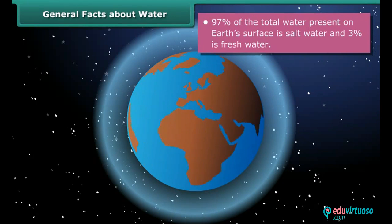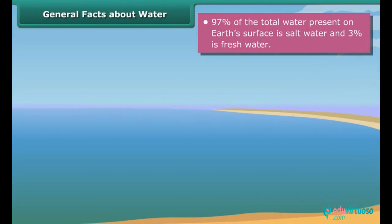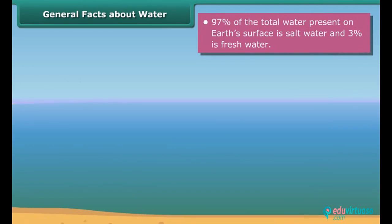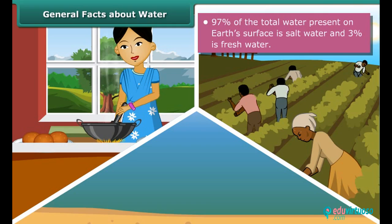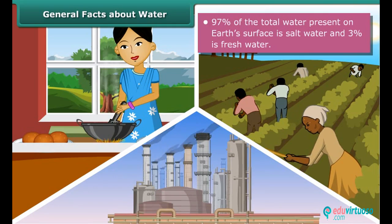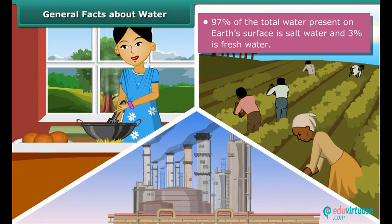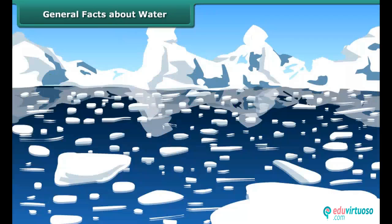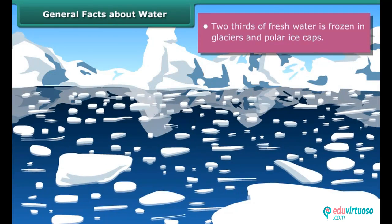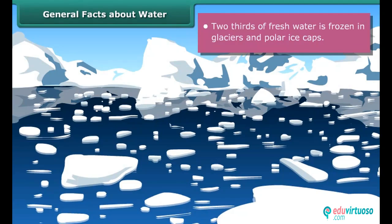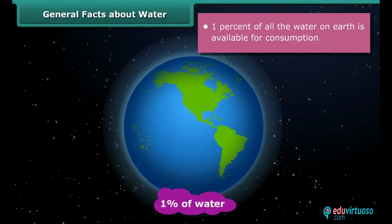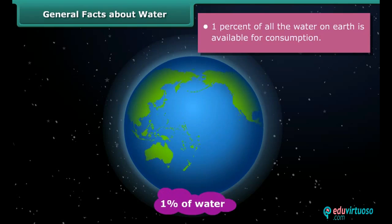97% of the total water present on earth's surface is salt water, so it is not safe for household, agricultural or industrial consumption. The remaining 3% is fresh water, two-thirds of which is frozen in glaciers and polar ice caps. That means roughly only 1% of all the water on earth is actually available for consumption.